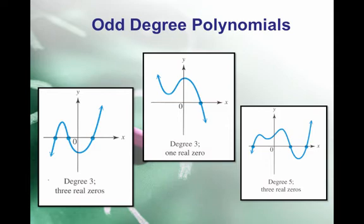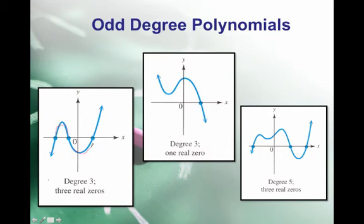Here are pictures of odd degree polynomials. This one has a degree of 3 — the degree is the number of turns plus 1. We have two turns, which gives us a degree of 3. What we're seeing is an odd degree polynomial whose domain and range is (-∞, ∞).